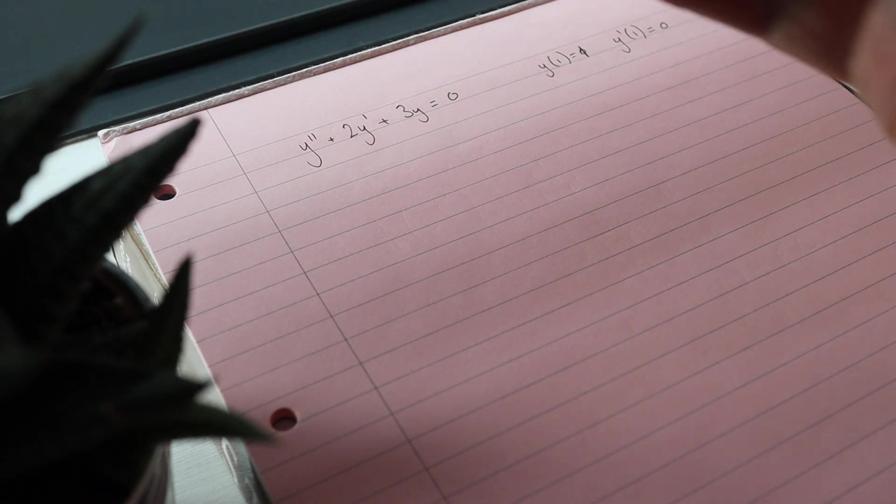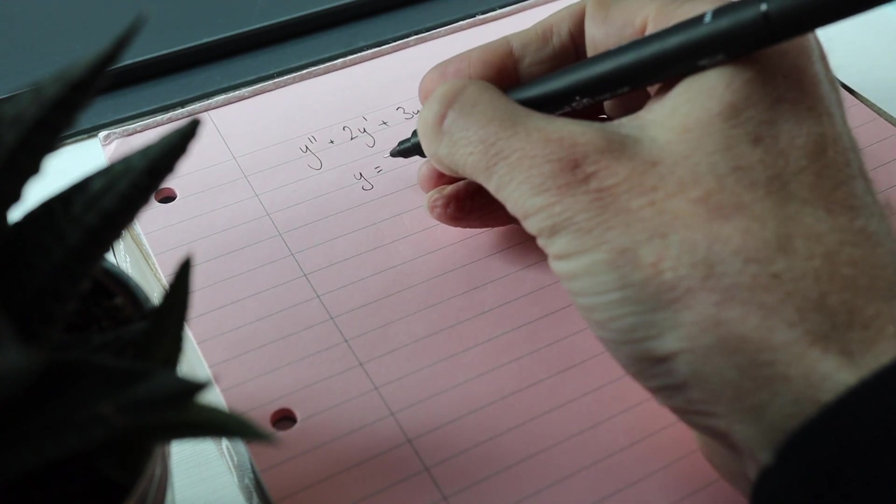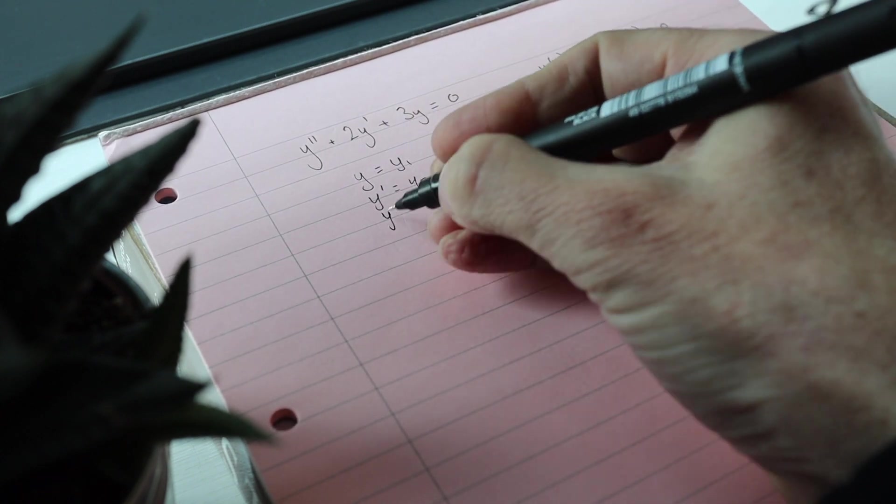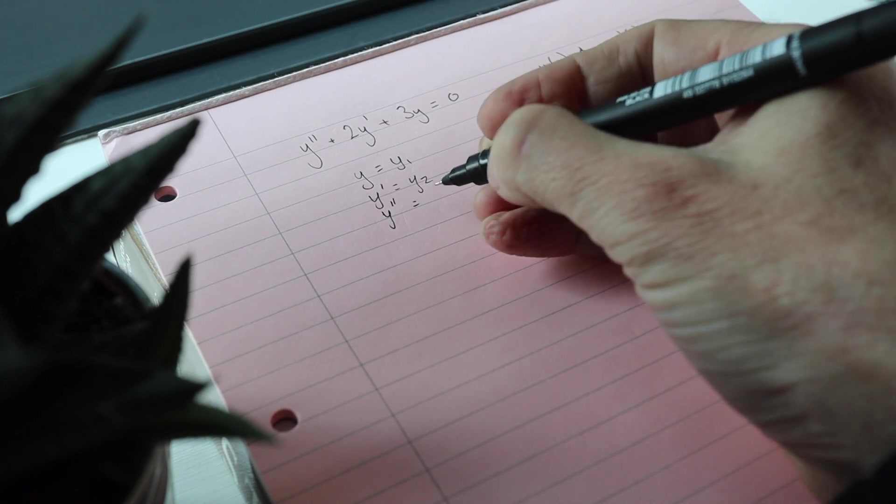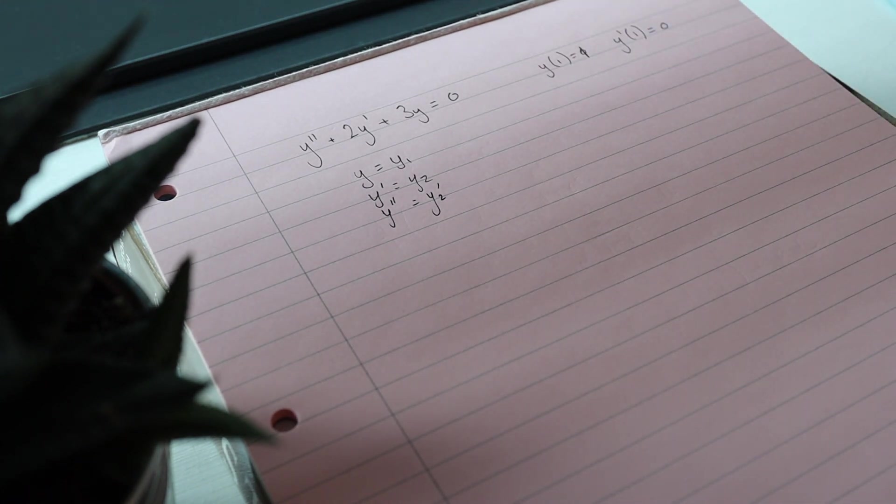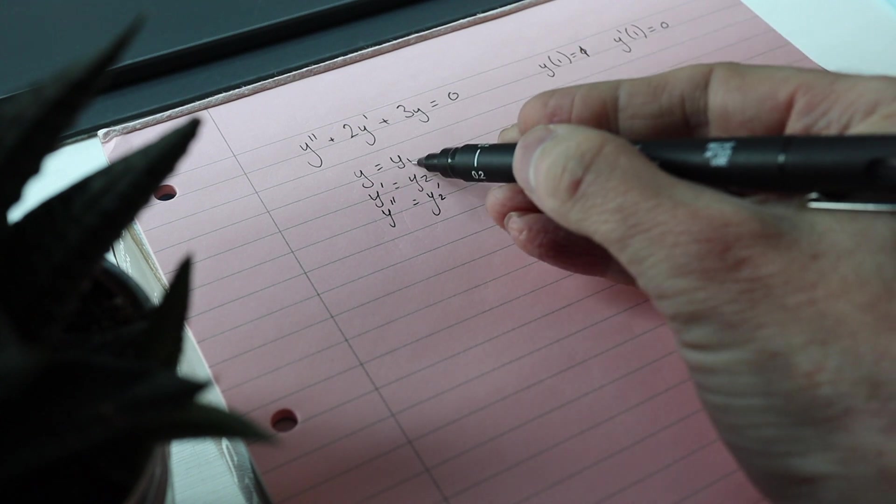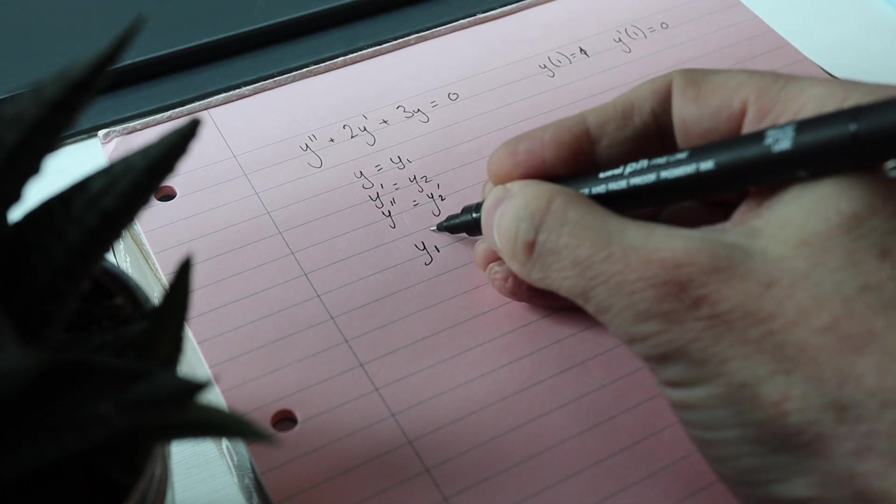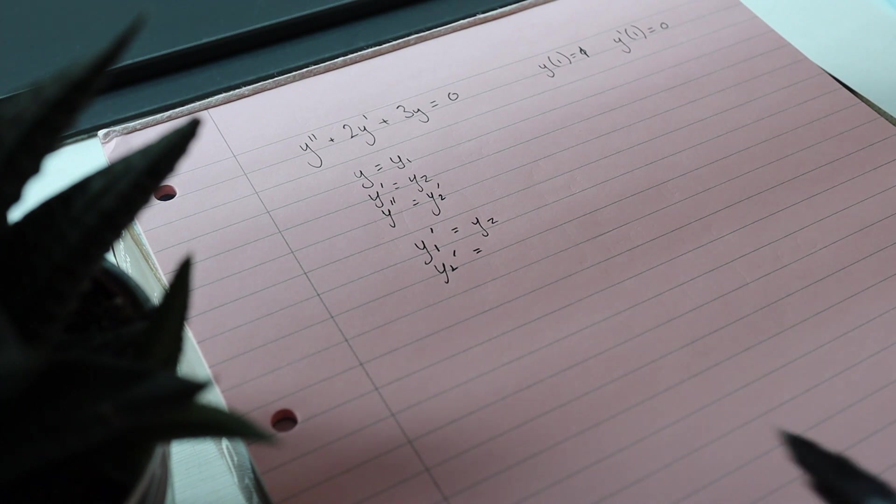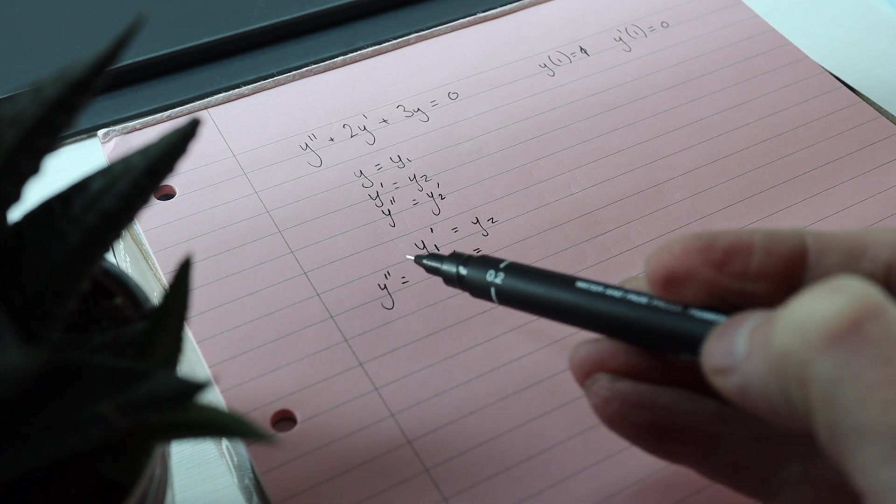Now you can use whatever symbols you like. I'm gonna have y equals y1, y dashed equals y2, y double dashed I could use y3, I'm not gonna need y3, I'm gonna use y2 dashed. Right, so y is y1, so y1 dashed is y2, y2 dashed is, so y double dashed is y2 dashed.